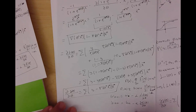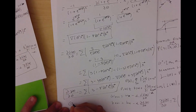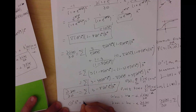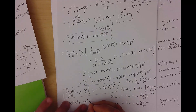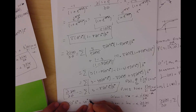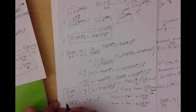The same update rule applies to b: b updates from the previous b minus the learning rate times the Jacobian. This part that I called theta is basically the generalized regression function.